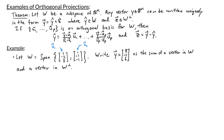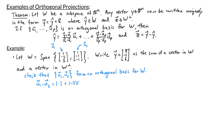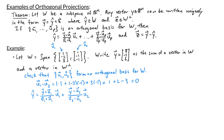If I want to use the formula for y-hat given in the Orthogonal Decomposition Theorem, I first need to check that u1 and u2 form an orthogonal basis for w. Taking the dot product of u1 and u2, I get 1·1 + (-2)·(-1) + 3·(-1), which is 1 + 2 - 3 = 0. So u1 and u2 are orthogonal. From a previous video, we know orthogonal sets are linearly independent, so since they're orthogonal, linearly independent, and span w, I have an orthogonal basis for w. Now I can find the orthogonal projection of y onto w using the formula.